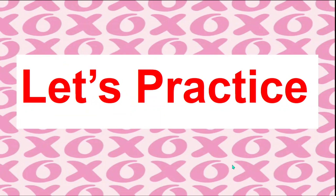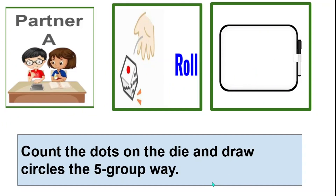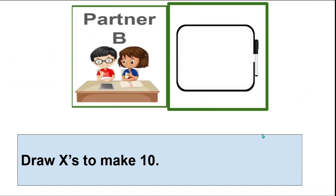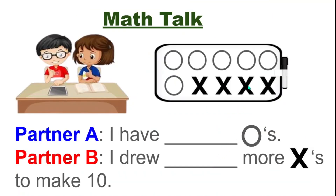Now it's time for you to practice. Partner A, get your die, roll it, and draw that many circles the five-group way. Now partner B, draw X's until you make 10. Have a map talk about your drawing. Partner A, here is your sentence stem: I have blank circles. And partner B, here is your sentence stem: I drew blank more X's to make 10.